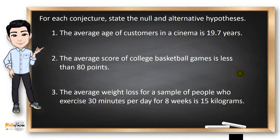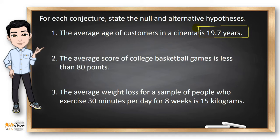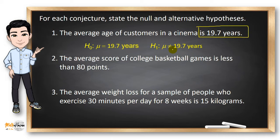Let's try this example. For each conjecture, state the null and alternative hypothesis. Number one: the average age of customers in a cinema is 19.7 years. We're just concerned with the alternative hypothesis because the null hypothesis is always equal. Since there was no mention of greater than or less than, the alternative hypothesis must be not equal to 19.7 years.